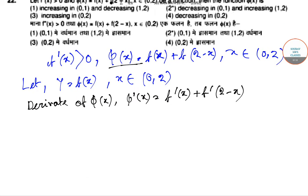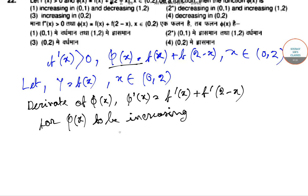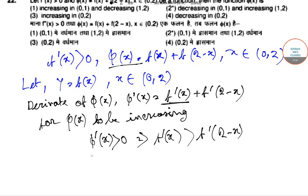For φ(x) to be increasing, we need φ'(x) > 0. This means f'(x) + f'(2 - x) > 0, so f'(x) > f'(2 - x). Since f'(x) is greater than f'(2 - x), this first function is greater than the second.